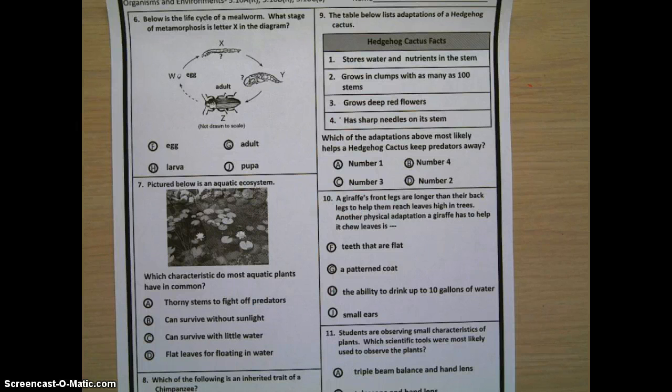Ten, a giraffe's front legs are longer than their back legs to help them reach leaves high in trees. Another physical adaptation a giraffe has to help it chew leaves is... F, teeth that are flat. G, a patterned coat. H, the ability to drink up to 10 gallons of water. J, small ears.